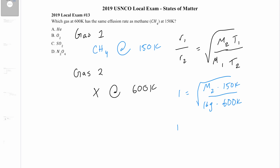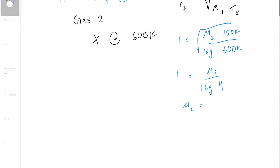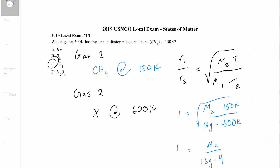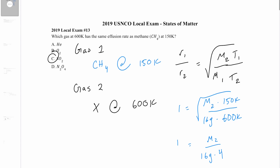Squaring both sides and simplifying: M2 over 16 grams times 4 equals 1, so M2 comes out to 64 grams per mol. The only answer choice with a molar mass of 64 is answer choice C, which is silicon dioxide. That was question 13.